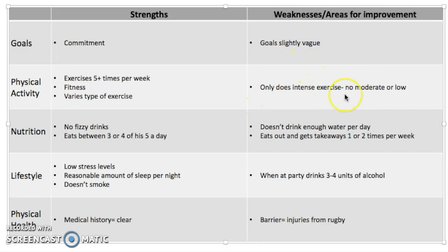Another weakness in the physical activity section is that he only does intense exercise and doesn't do any moderate or low intensity exercise. Intense exercise is really important, but it's also important to vary intensities and include moderate and low exercise so the body is used to all levels. The NHS recommends 60 minutes of mixed moderate and intense physical activity every day, so it's not good to only do intense — it's also beneficial to give the body a slight break with some moderate activity.